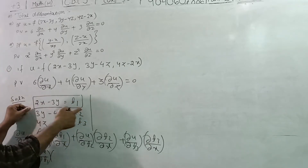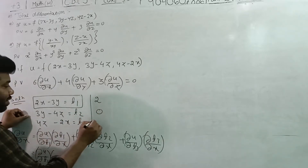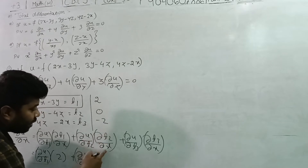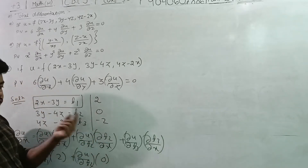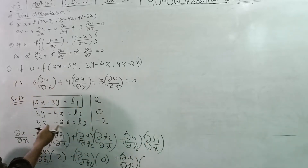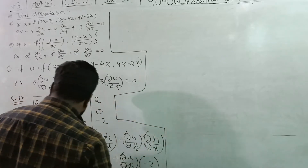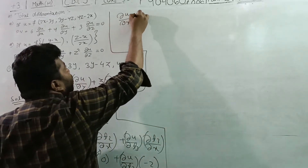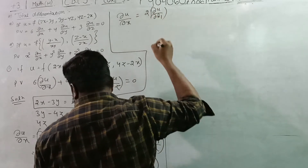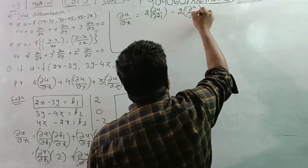So del u by del x equals del u by del t1 times 2, plus del u by del t2 times 0, minus 2 del u by del t3. This is equation number 1.